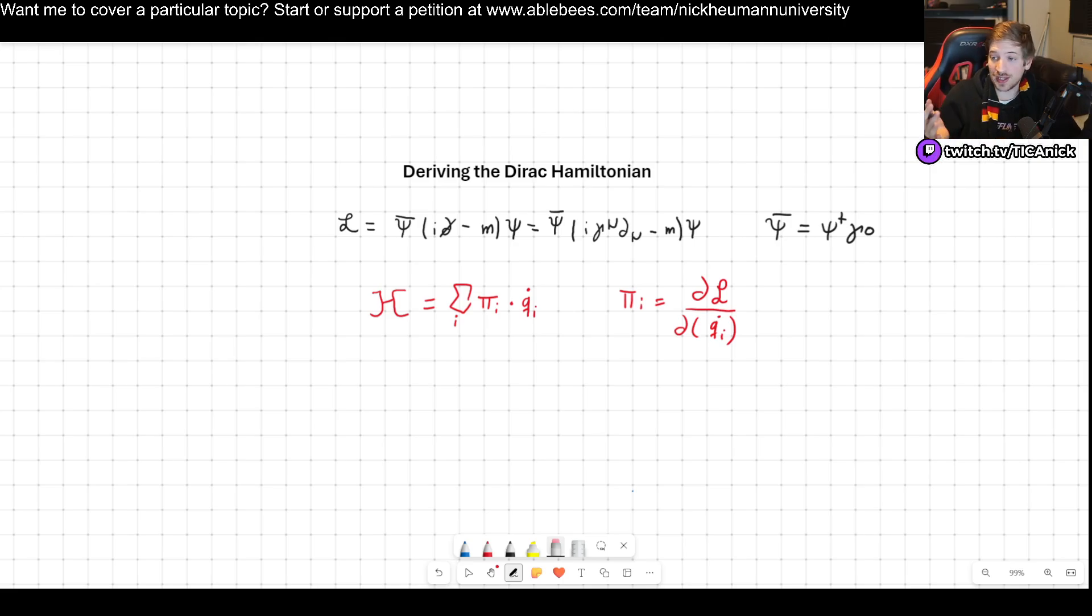Since we already know the Lagrangian, the best way to go to the Hamiltonian, which is how we like to quantize things, is to do this. So I wrote down here the Lagrangian for the Dirac field, which we already know.